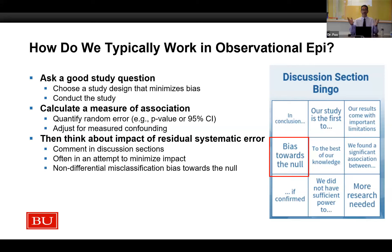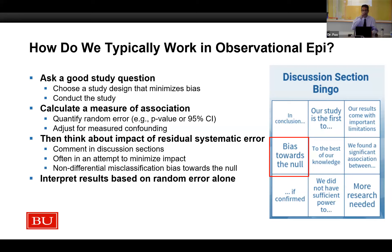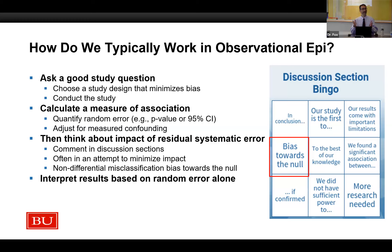That's where the whole 'non-differential misclassification biases towards the null' causes us problems, because we know there are lots of situations where it doesn't actually bias towards the null. Then what do we do? We interpret the results based on almost exclusively that random error estimate alone. Is it statistically significant? We might get into whether the effect is meaningful. But we ignore all of the things I just told you were problems in the limitation section when we draw our conclusions. In fact, often the conclusions are drawn in the opening paragraph of the discussion before I've even told you what the limitations are.